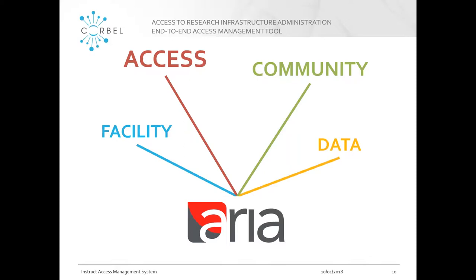We're going to go through the four core areas of ARIA: access management, facility management, community services, and data management. These four areas are all joined up with our up-to-date authentication system. Because ARIA is in use in many different facilities and by multiple access providers, we've put together a single sign-on offering. Users can choose from a number of authentication options: an Instruct-specific account, an EduGAIN account — a global collection of universities and research institutes — or an Umbrella ID, which is the identity system for photon and neutron facilities in Europe. When you log in, you can connect multiple external identities to one single Instruct account.